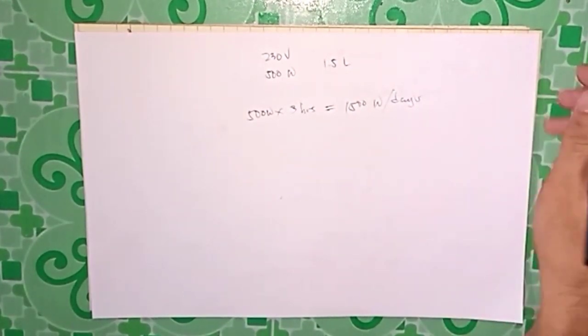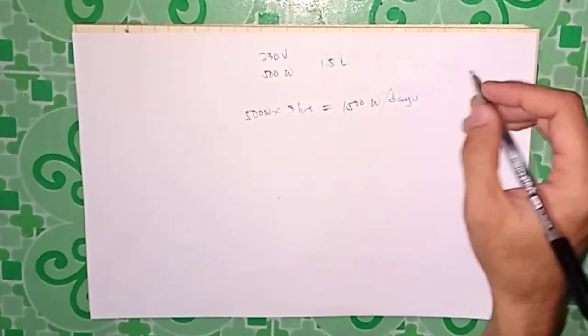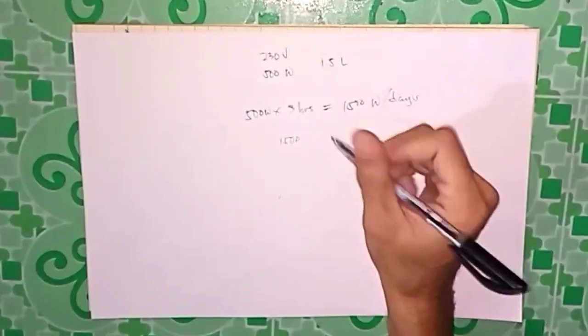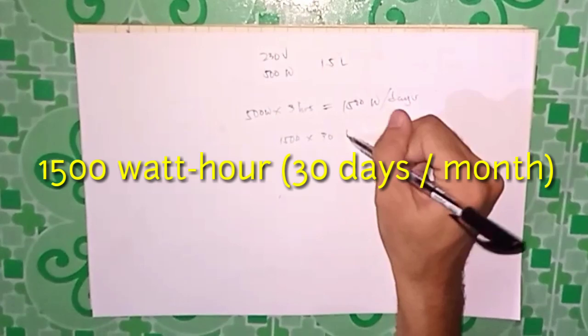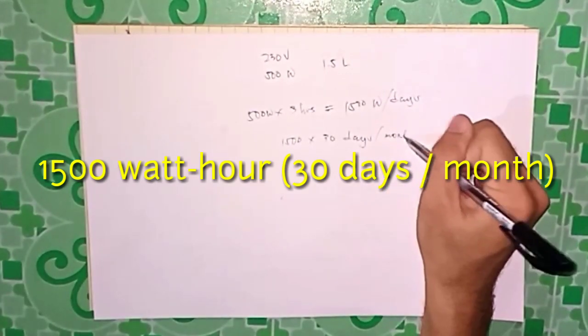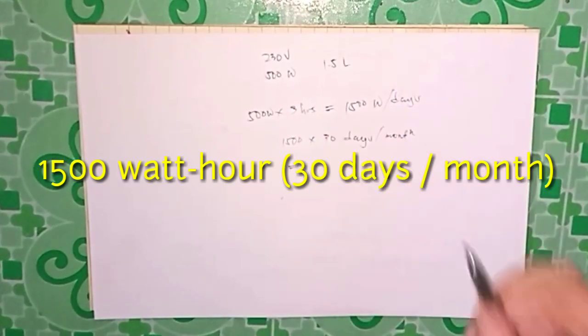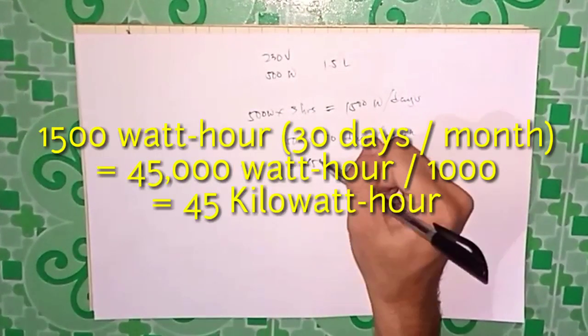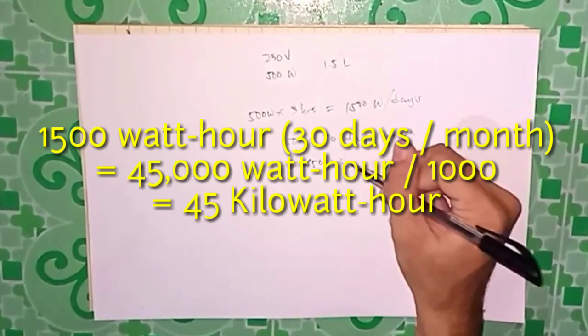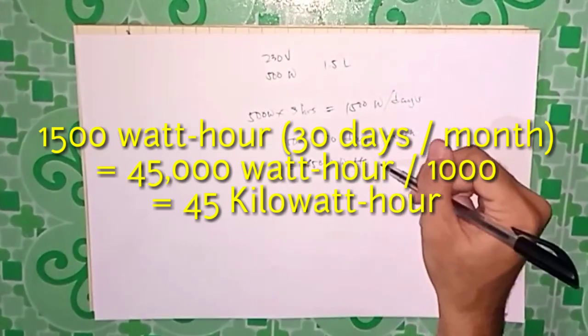Per day only. Then multiply by 30 days per month. And that is 45,000 watts.